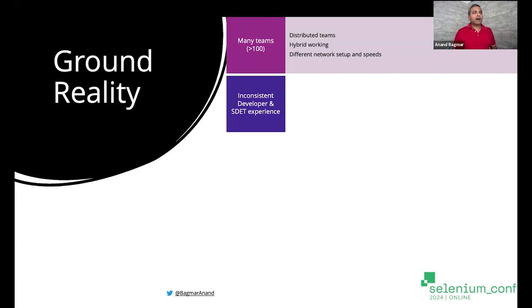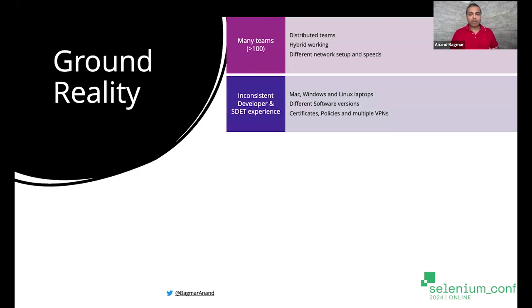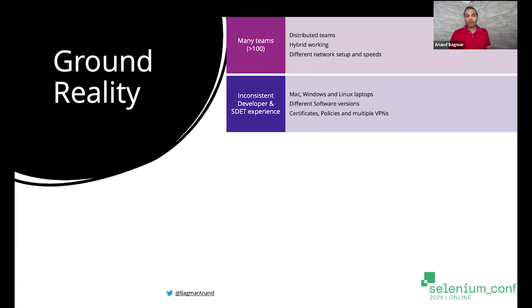There is a lot of inconsistent developer and estate experience. There are different types of operating machines — Mac, Windows, Linux of different versions. Each of these would have different certificates and policies applied to it. There might be multiple or different types of VPNs that you need to connect to in order to access your applications or internal resources.